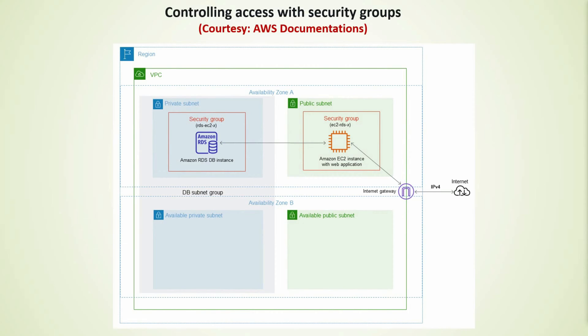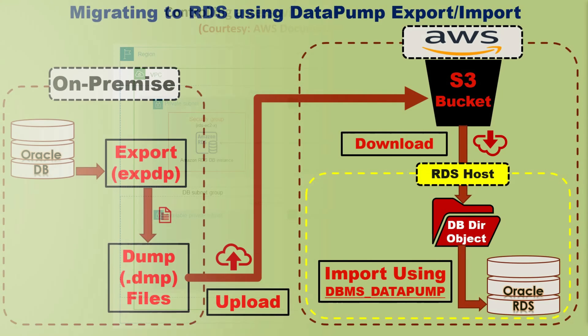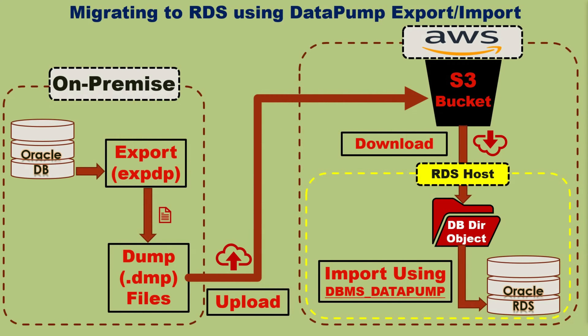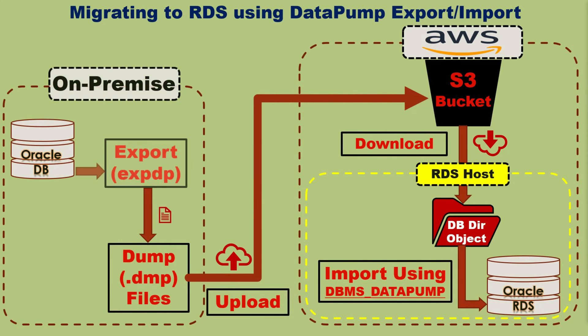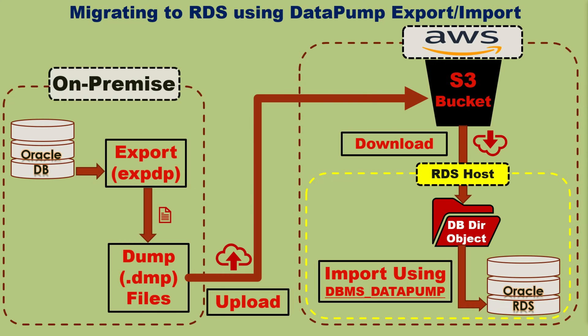Let me explain the migration procedure we will follow, first in a diagram, then we'll see it in action. Say we have an on-premises Oracle database to migrate to RDS. We will first do a traditional data pump export of the database or the specific application schemas we want to migrate, which will create one or more dump files in the local file system of the on-premises database host. We will then upload these dump files to an AWS S3 bucket designated for the RDS instance.